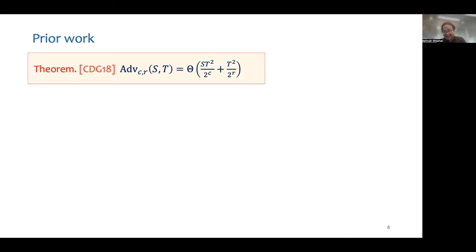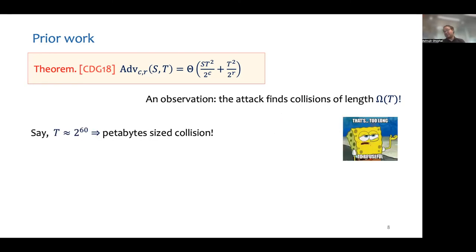However, the attack that they propose which achieves this advantage finds collisions of length nearly T. For usual parameter values, collisions this long are not very useful. In addition, short collisions seem harder to find than longer ones. Hence, we ask the question,